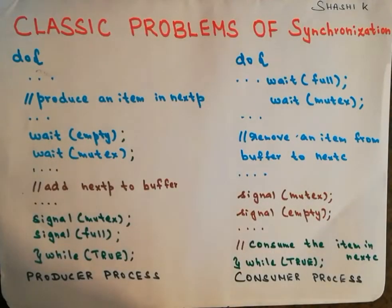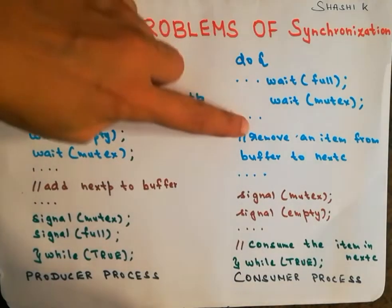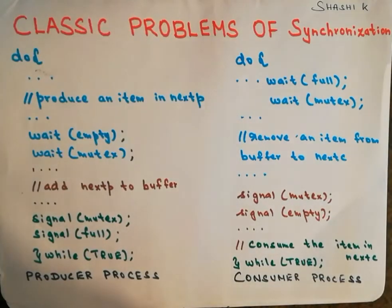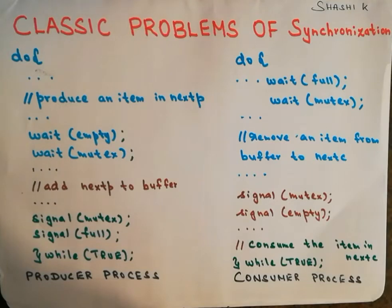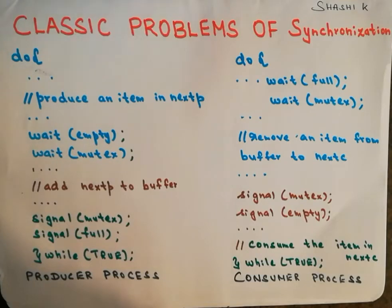Here is the code for the producer process and the consumer process. The producer produces an item and places it in a variable called nextp. Then, for the producer to place the item in the buffer, it needs at least one empty buffer. If all buffers are full and the producer tries to place an item, it may result in overflow. So the producer must check whether any buffer is empty.